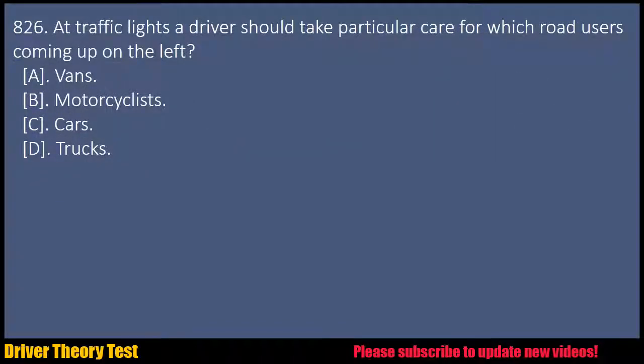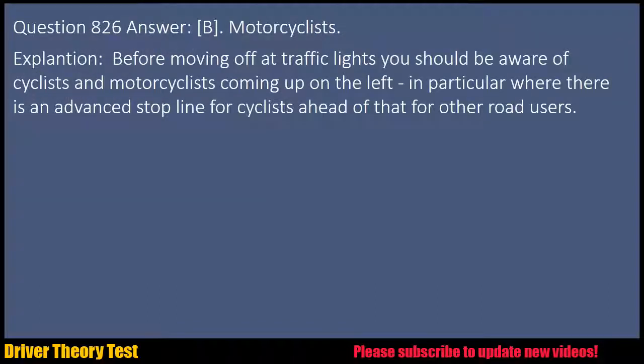Question 826: At traffic lights, a driver should take particular care for which road users coming up on the left? A. Vans. B. Motorcyclists. C. Cars. D. Trucks. Answer: B. Motorcyclists. Explanation: Before moving off at traffic lights, you should be aware of cyclists and motorcyclists coming up on the left, in particular where there is an advanced stop line for cyclists ahead of that for other road users.